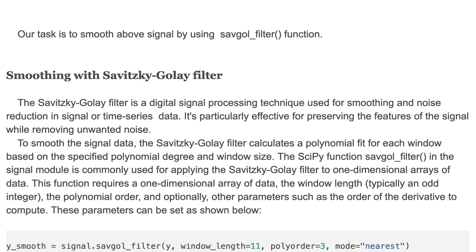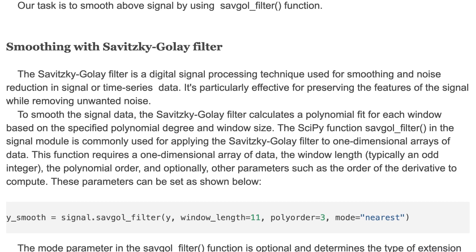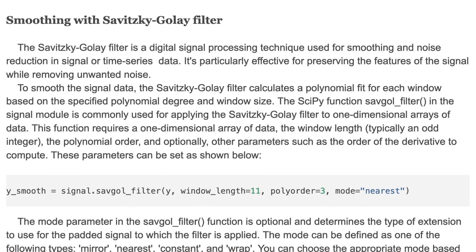This function requires a one-dimensional array of data, the window length (typically an odd integer), the polynomial order, and optionally other parameters such as the order of the derivative to compute. These parameters can be set as shown below.